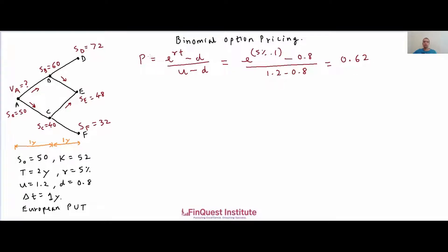The probability of the down move, q, is simply 1 minus p, which equals 1 minus 0.62, giving roughly 0.38. So p is the probability of the up move and q equals 1 minus p is the probability of the down move. These two probabilities sum to 1 because we are assuming a binomial distribution with only two states.